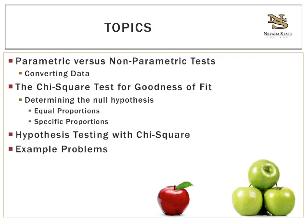What this lecture will cover is, first, parametric versus nonparametric tests. We have, up until this point, been conducting parametric tests, and this is the only nonparametric test that we will do in this class — the two chi-square tests. In addition, I'll show you how you can convert data from something used in a parametric test to something used in a nonparametric test. Then we'll go into the chi-square test for goodness of fit, including how to determine the null hypothesis — equal proportions or specific proportions — as well as hypothesis testing with chi-square, with example problems.